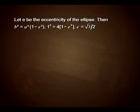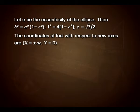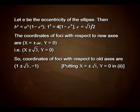Let e be the eccentricity of the ellipse. Then b² equals a² into 1 minus e², that is 1 equals 4 into 1 minus e², which on solving gives us e equals √3 upon 2. The coordinates of foci with respect to the new axes are X equals plus or minus ae and Y equals 0, that is X equals plus or minus √3 and Y equals 0.